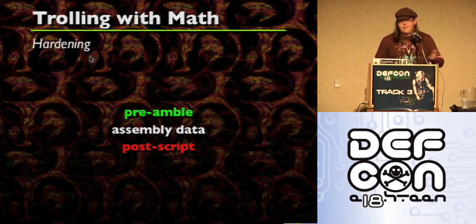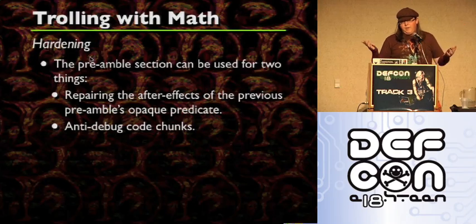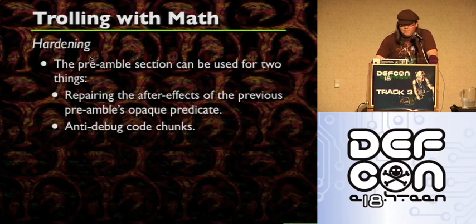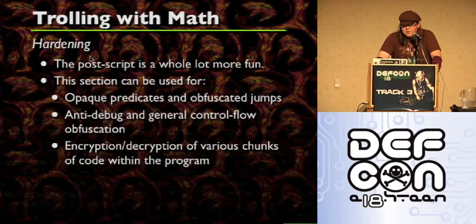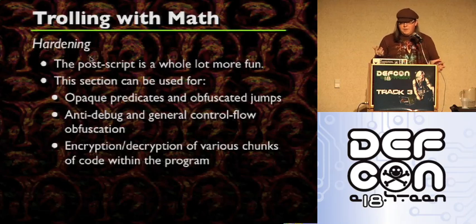You have your preamble, your assembly data, and then your postscript. The preamble is essentially what comes before the assembly instruction, and the postscript is obviously what comes after it. The preamble section can be used for two things: you can repair the after-effects of the previous opaque predicate's preamble, and anti-debug code chunks can go in there too. But the preamble is very limited because you can't really do that much. The postscript you can do a whole lot more with because it's going into the next instruction so you don't have to worry as much.